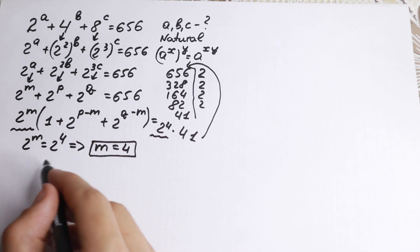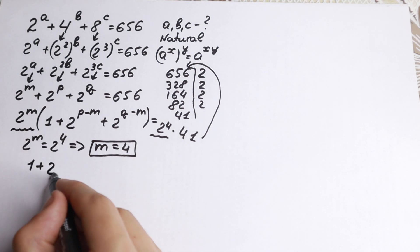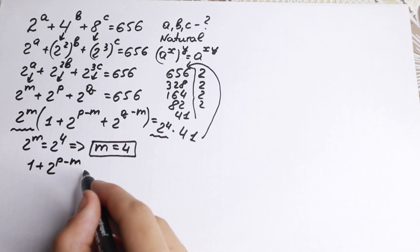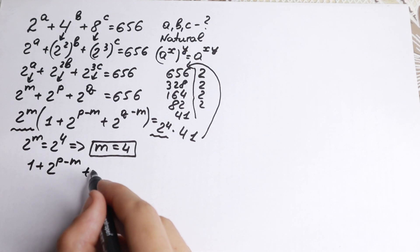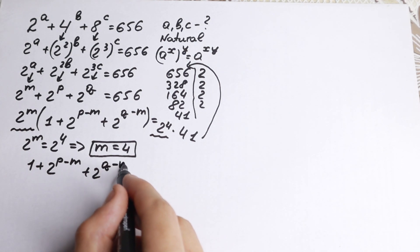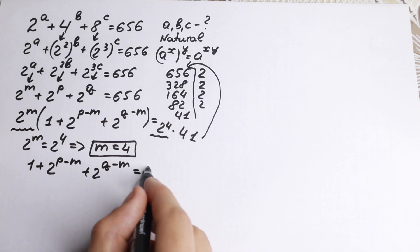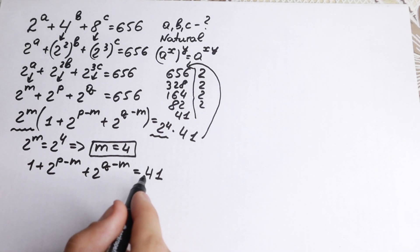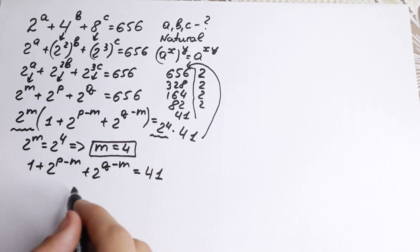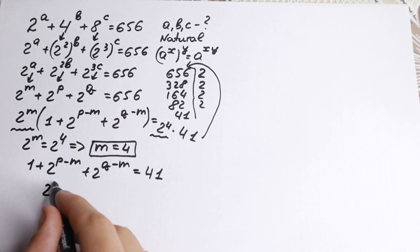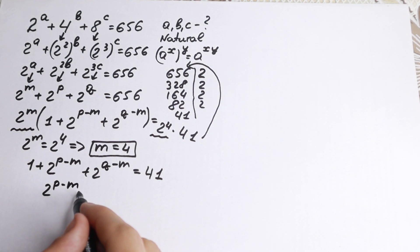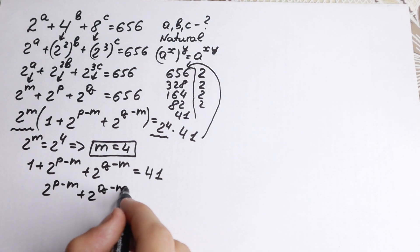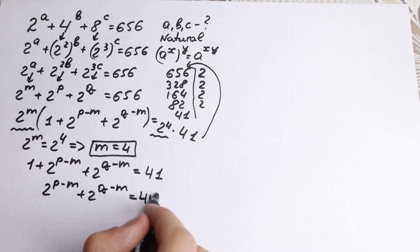We still have the expression 1 plus 2 to the power p minus m plus 2 to the power q minus m equal to 41. Subtracting 1 from both sides, we get 2 to the power p minus m plus 2 to the power q minus m equal to 40.